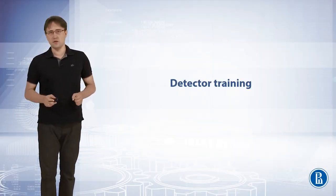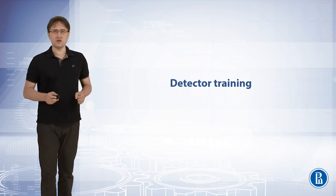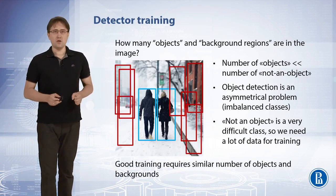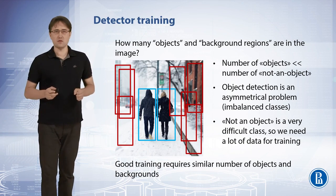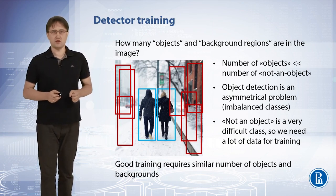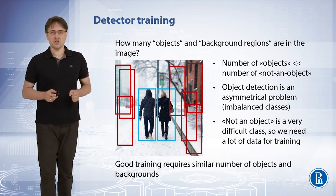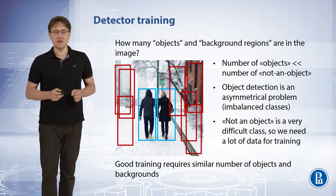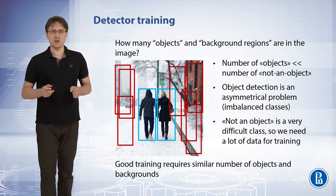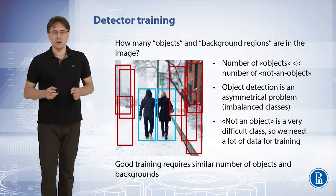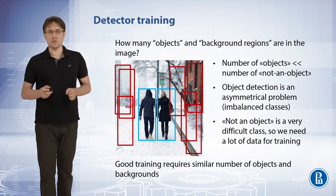In this video I will talk about detector training. How many objects and background regions are in an image? The number of objects is several magnitudes smaller than the number of background regions. So object detection is an essentially asymmetrical problem with very imbalanced classes. The background class is very difficult, so we need a lot of good data, and good training requires a similar number of object and background examples.